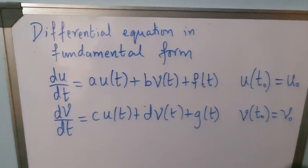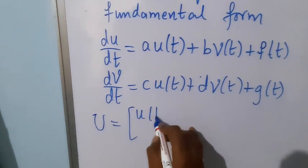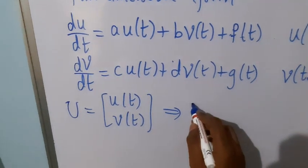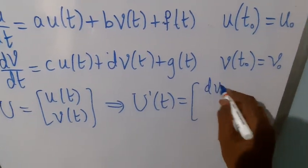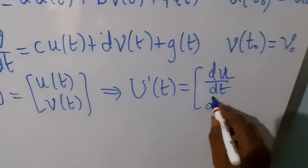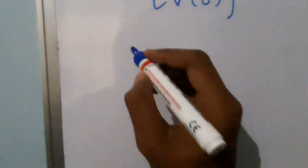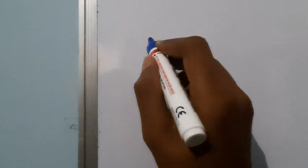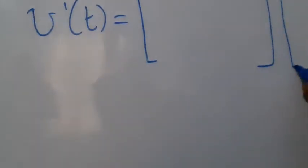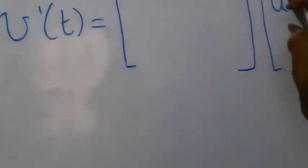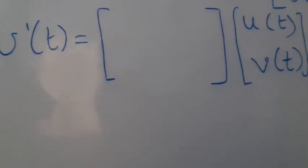We need to write this in the form of a matrix. If we consider capital U to be the vector [u(t), v(t)]ᵀ, then U'(t) is [du/dt, dv/dt]ᵀ. So we will have U'(t) equal to a matrix times [u(t), v(t)]ᵀ plus [f(t), g(t)]ᵀ.